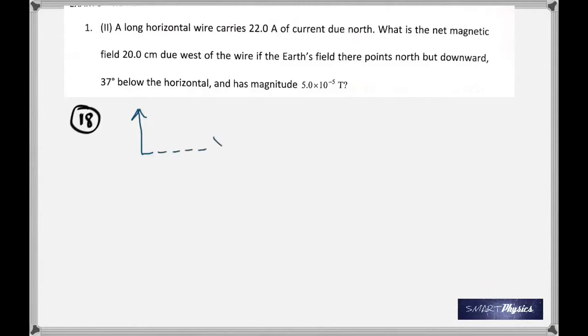Sketch it down. You get that's the x-axis and that is the Earth's magnetic field 37 degrees below the horizontal, and it is 5 times 10 to the negative 5 Tesla. BW is the magnetic field due to the wire, given by the formula μ₀I/(2πr).